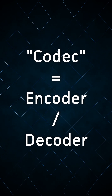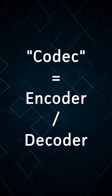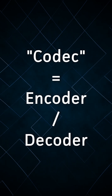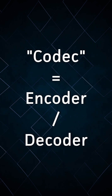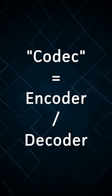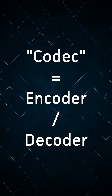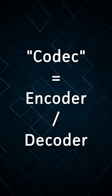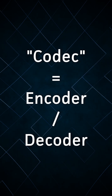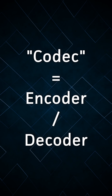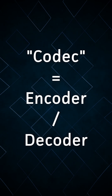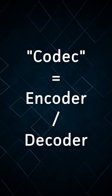The word codec is short for encoder decoder. An encoder is a bit of software which converts a digital video into a stream of ones and zeros, and a decoder is a program that takes that stream and converts it back into a full-color digital video that can be sent to a display device.